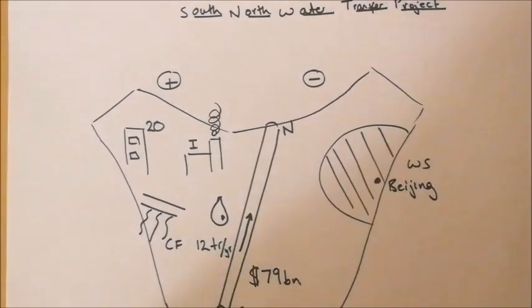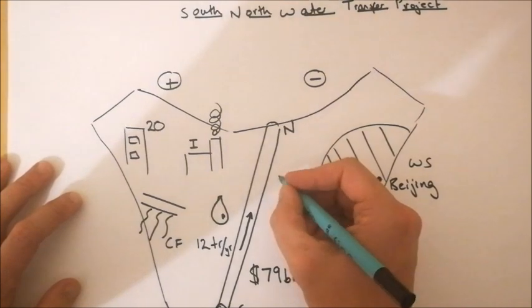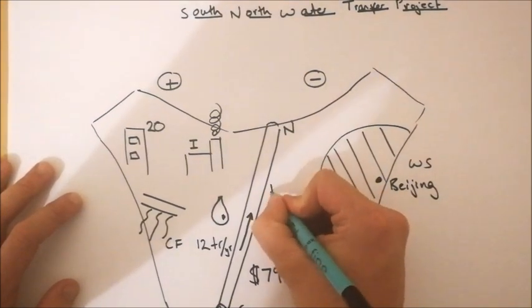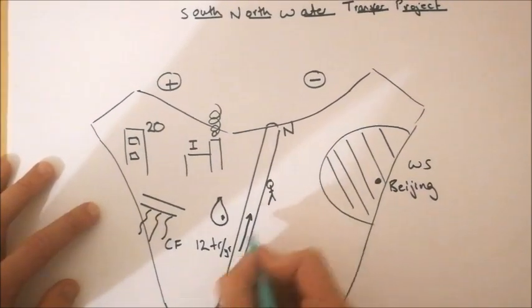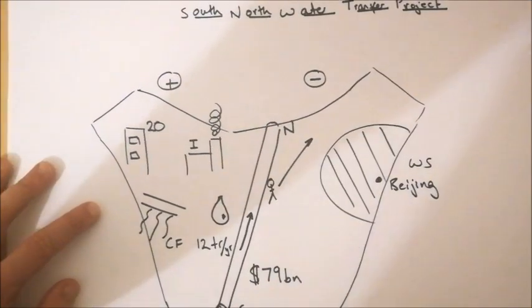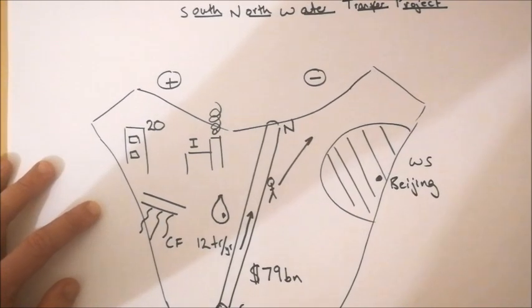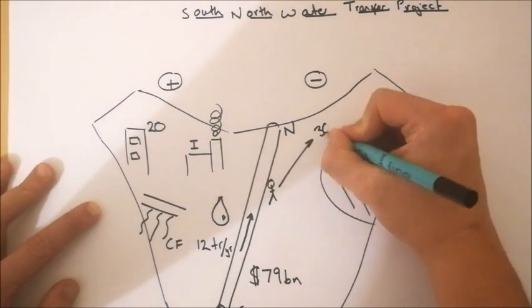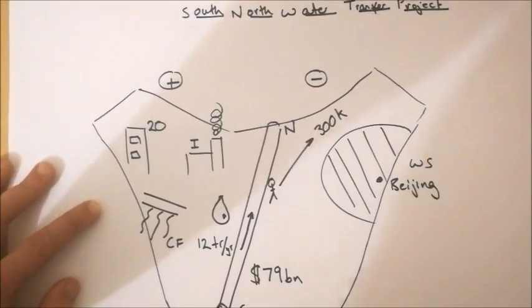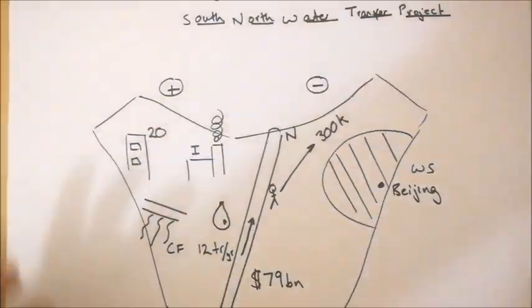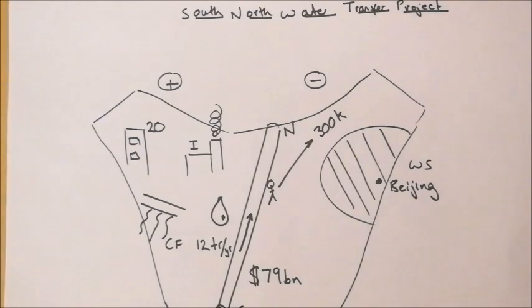On top of that, what we've seen is a huge number of rural communities displaced from the route from the South to the North, the pipelines and the pumping stations which have been built. They've resulted in over 300,000 people being displaced from their rural villages and homes and losing their farmland, just to make room for these constructions.